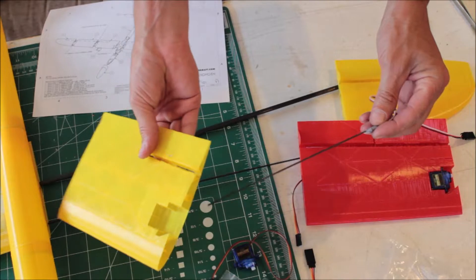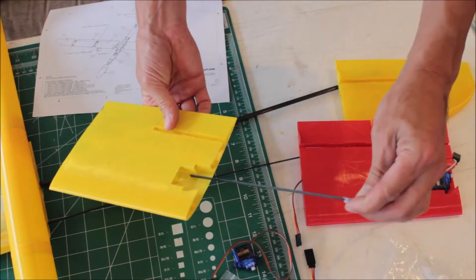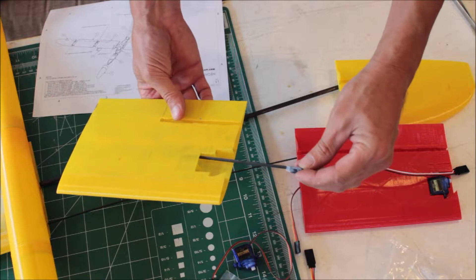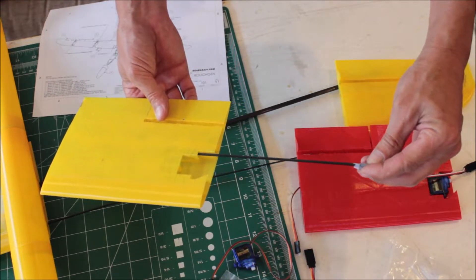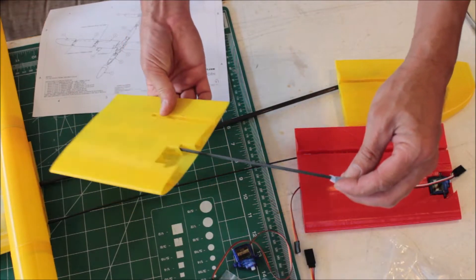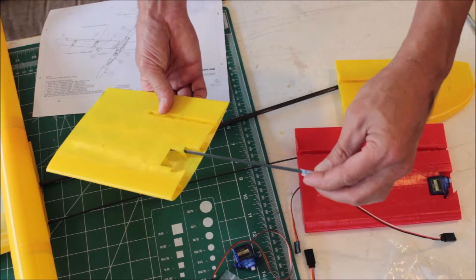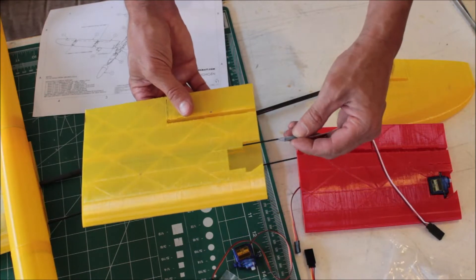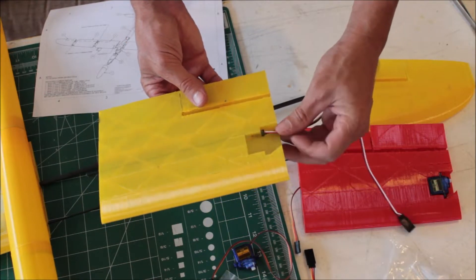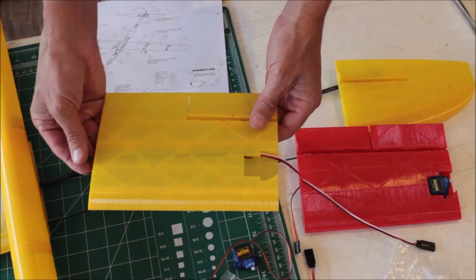Instead of feeding it in where the flap servo goes, we're going to feed it in one panel further out. So there's a hole right here and it feeds in. You can kind of see where it's going to go. This makes it so there's a little bit of room.